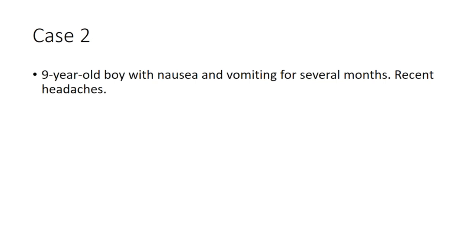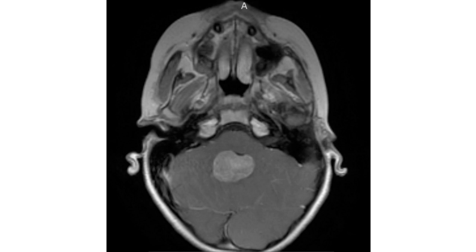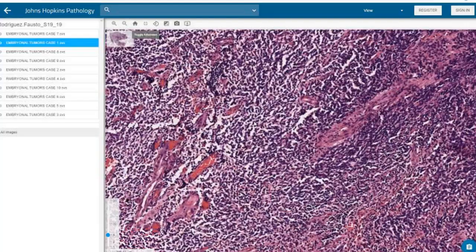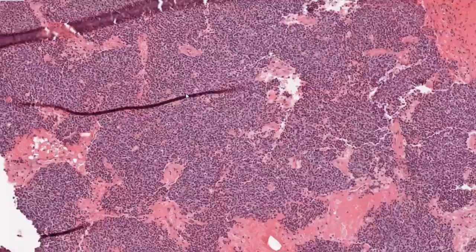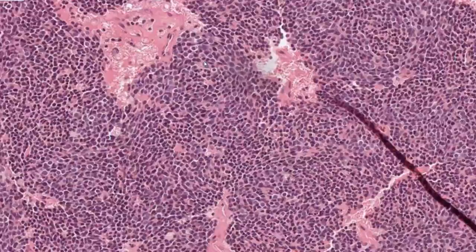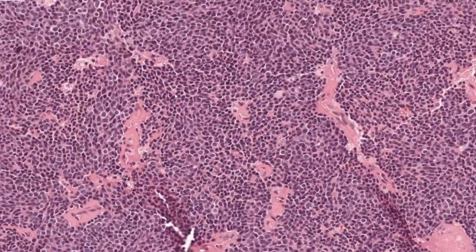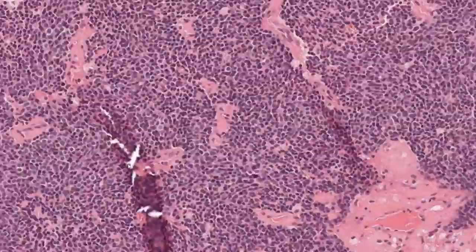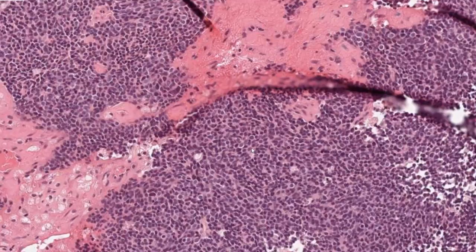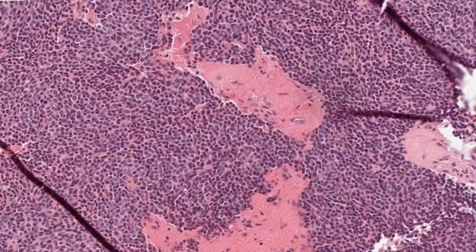Case number two: a nine-year-old boy with nausea and vomiting for several months and recent onset of headaches. MRI shows a contrast-enhancing mass filling the fourth ventricle. On high power, we are again dealing with a small round blue cell tumor in the posterior fossa of a young boy, making medulloblastoma the leading consideration. There is no significant nuclear enlargement, and a few cells have small nucleoli — nothing to suggest significant anaplasia. Some areas may represent neuronal differentiation.